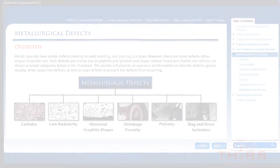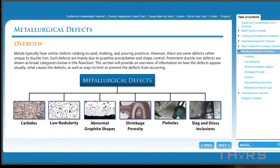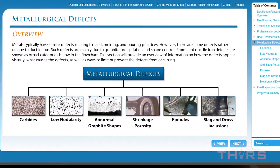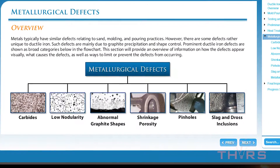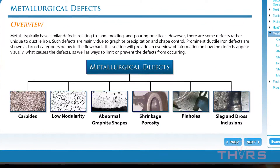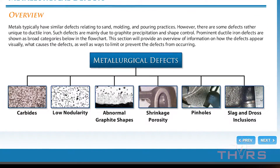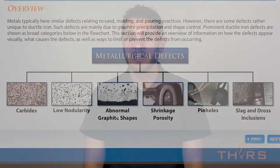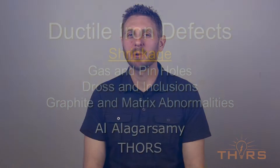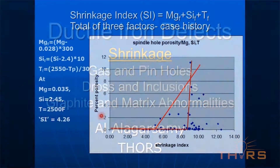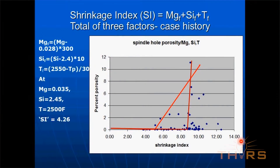This course offers a wealth of knowledge regarding not only shrinkage porosity, but other defects such as pinholes, slag and dross inclusions, excessive carbides, and abnormal graphite shapes. And if you really want to dig deeply into shrinkage porosity, THORS also has an hour-long webinar presentation that looks extensively at the root causes of shrinkage porosity.